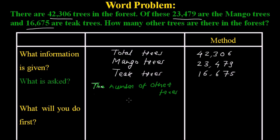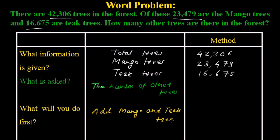While calculating this, first of all we have to do the addition of mango trees and teak trees. So mango trees are 23,479 plus teak trees are 16,675.